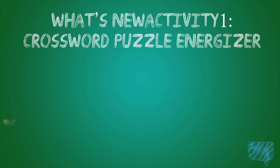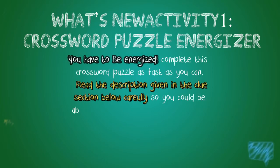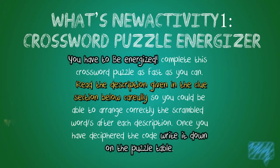In the Cross Puzzle Energizer activity, you have to be energized. Complete this crossword puzzle as fast as you can. Read the description given in the clue section carefully so you can arrange correctly the scrambled words after each description. Once you have deciphered the code, write it down on the puzzle table.